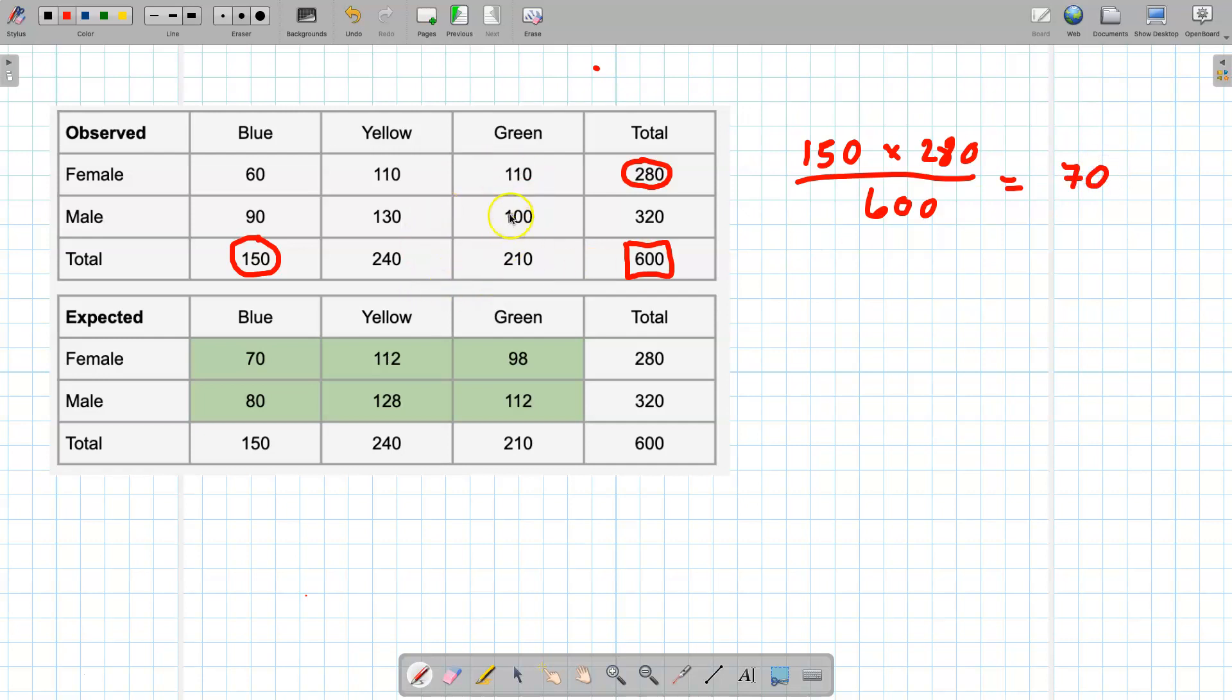Let's work out this 112. How do we get 112? Well it's this one here, so we're going to take 210 and 320 and we're going to divide it all by the grand total which is 600, and we get 112. You can check that on your calculator.